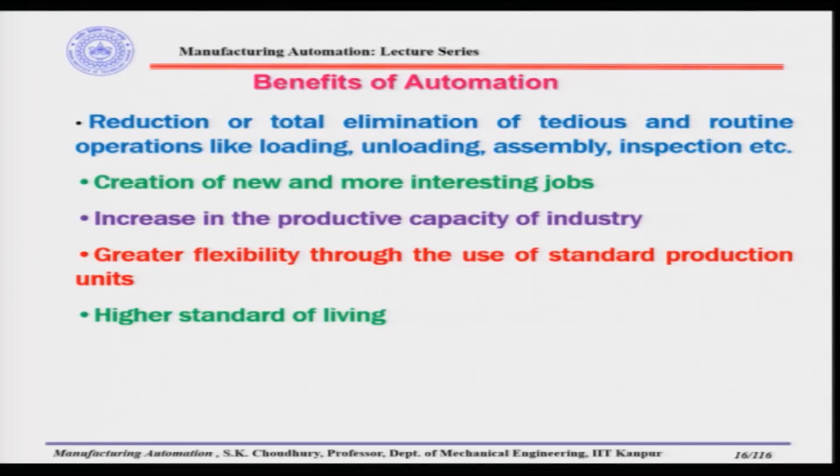Fourth, automation provides greater flexibility through the use of standard production units which can be rearranged and assembled in different ways — this is the building block technique. Just as children use Lego blocks to make a house, ship, or aeroplane, standard modular units in automation can be combined in very different ways to produce varied final products, giving a lot of flexibility.